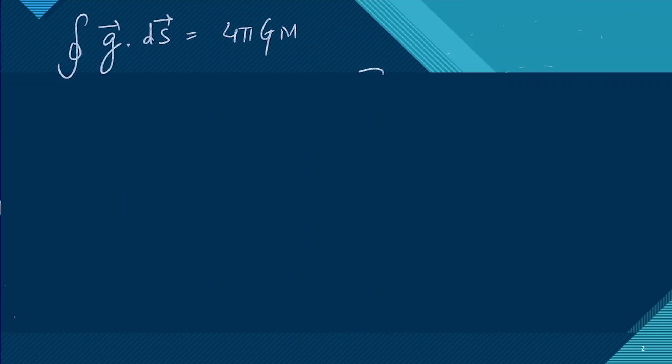So here, this is Earth which is producing this field, which is of mass M, radius capital R. We have to calculate the gravitational potential at a distance of small r. So let's draw a Gaussian surface.